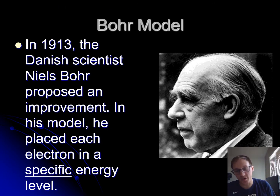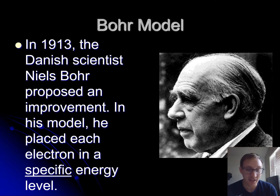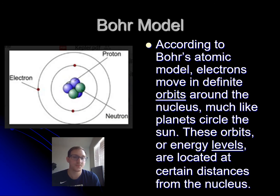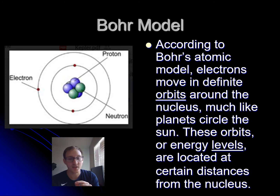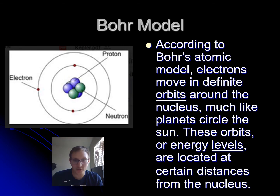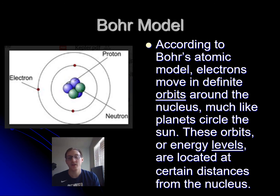Danish scientist Niels Bohr proposed an improvement to Rutherford's model. He kept the positively charged nucleus at the center and the electrons on the outside, but placed electrons in specific energy levels at specific orbits around the nucleus — much like planets orbit the sun. In the picture, the nucleus sits at the center, with two electrons in the first energy level, and additional electrons in each successive energy level farther out.